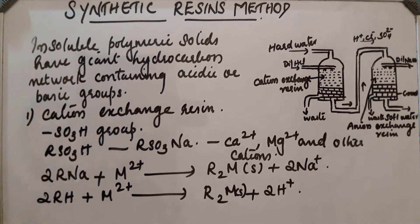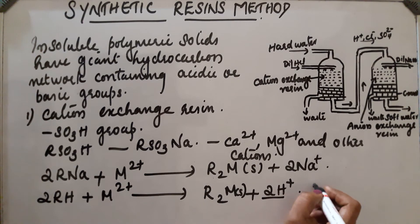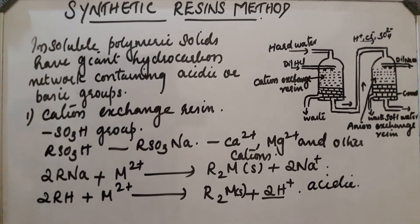H+ ions are liberated, and R2M is the exhausted resin. The resin in the solution is completely converted into R2M, so the resin is exhausted. The H+ ions present in the solution make it acidic. In order to neutralize this solution and also to remove anions present in hard water, we have to pass this through the anion exchange resin.